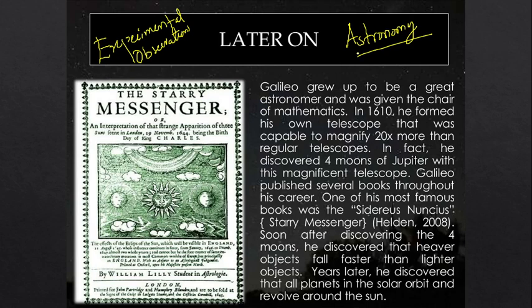Astronomy was one particular field in which Galileo contributed a lot. He was able to observe many phenomena in space using his telescopes. He spent a lot of time observing planets and stars, and was able to detect many unseen phenomena. In 1610 he formed his own telescope, which could magnify 20 times more than regular telescopes. Galileo was not the person who invented the telescope, but he built one for himself and used it to detect many phenomena and make spatial observations.